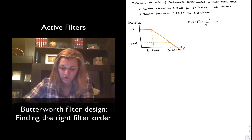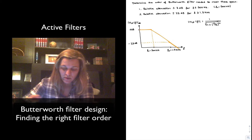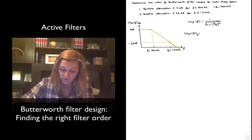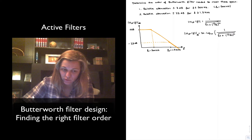For a Unity gain filter, the magnitude response is 1 divided by the square root of 1 plus (f over fc) to the power of 2n. If I calculate it in dB, that will be equal to 20 times the log base 10 of 1 over the square root of 1 plus (f over fc) to the power of 2n.